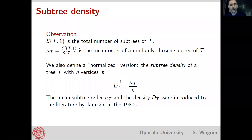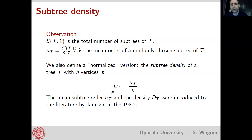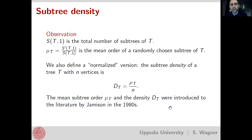These concepts were introduced in the early 1980s in papers by Jamison, among the early issues of the Journal of Combinatorial Theory, Series B. He proved a number of rather interesting results about the mean subtree order and density, including results about the minimum and maximum.